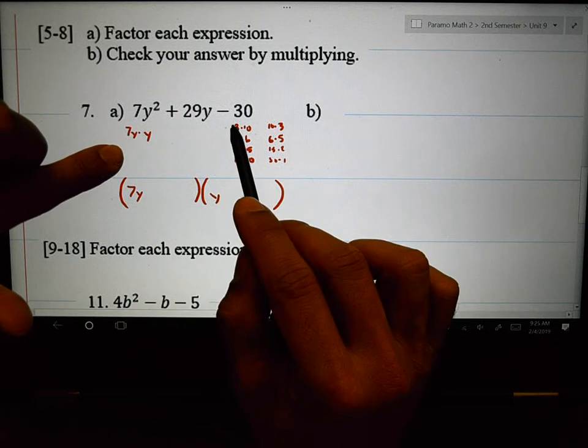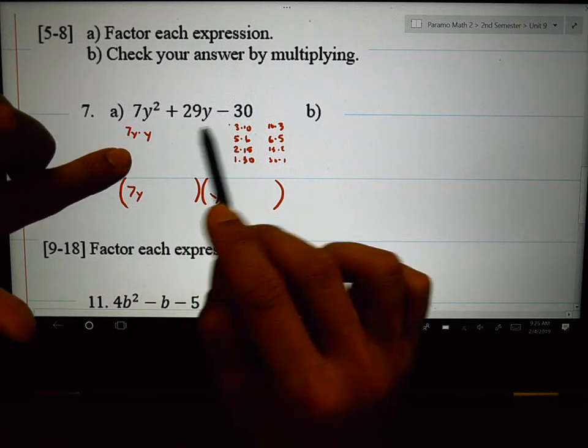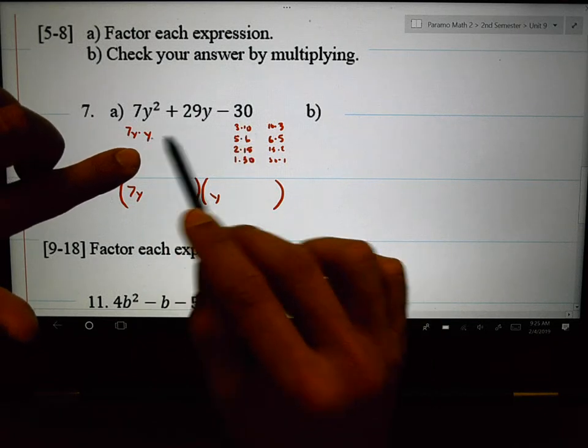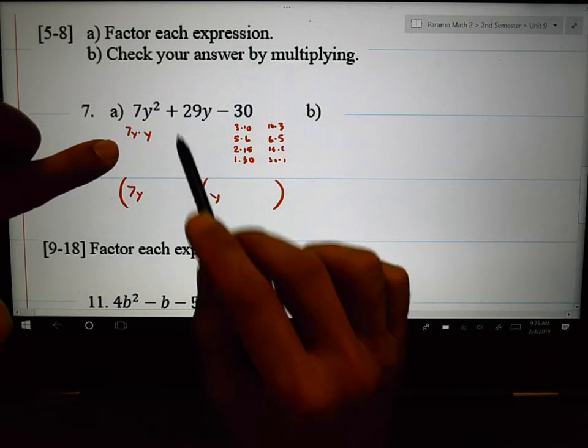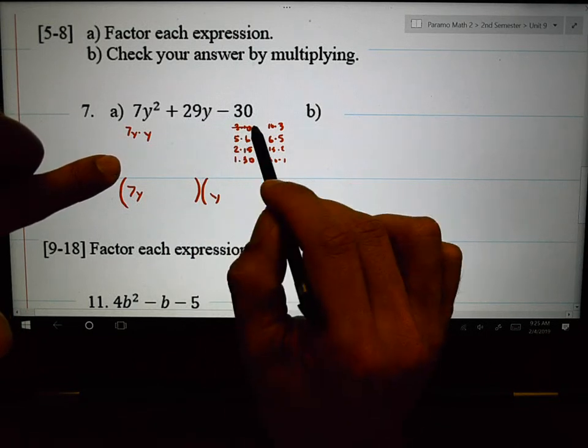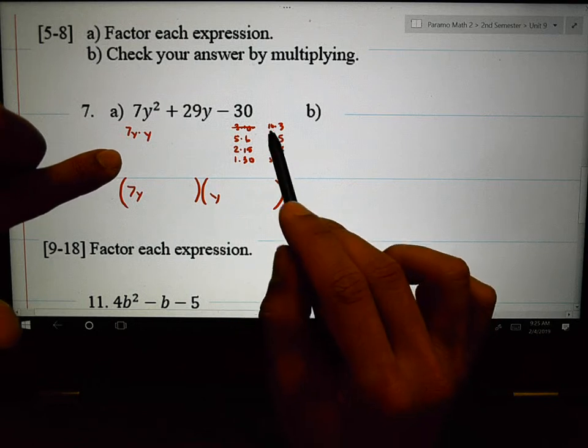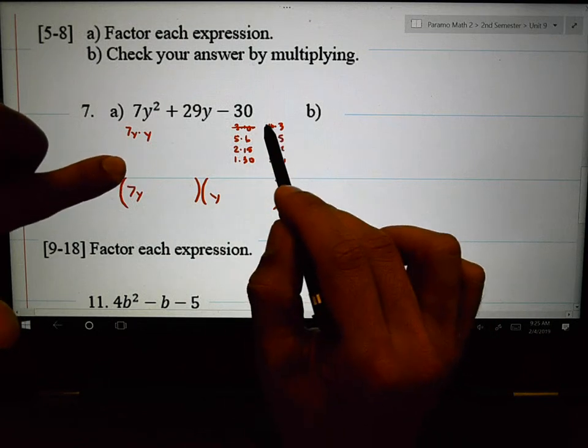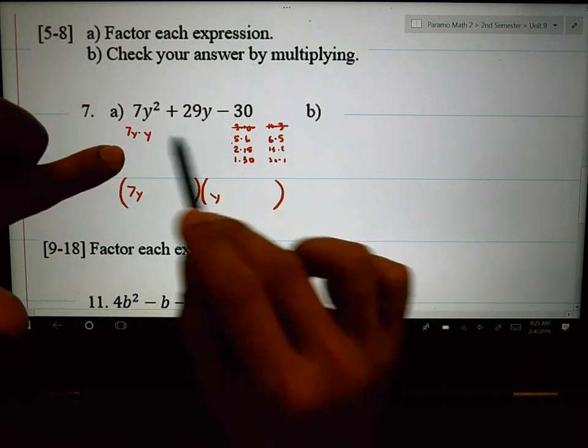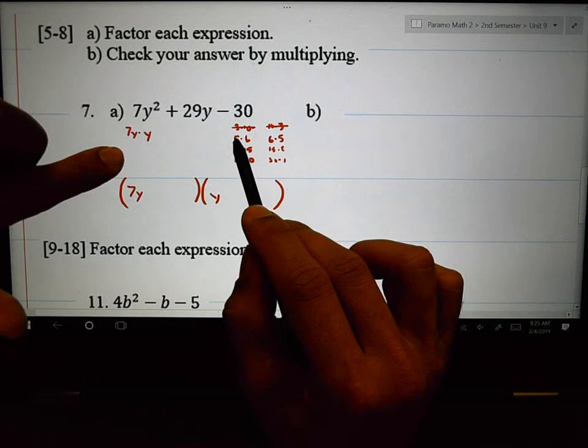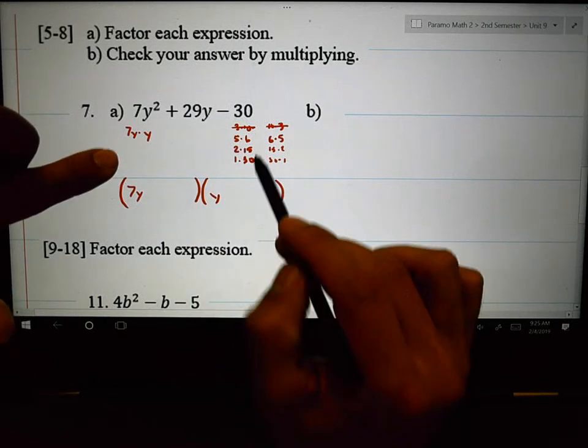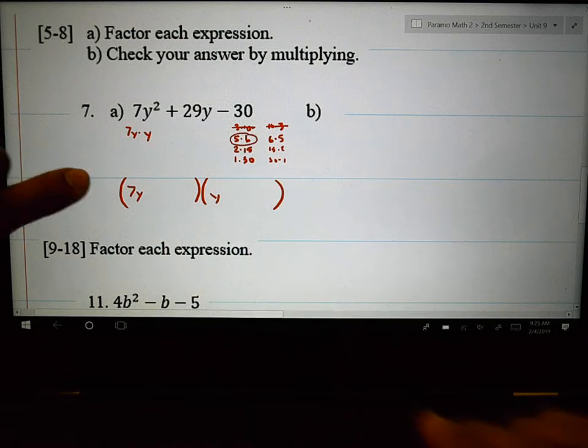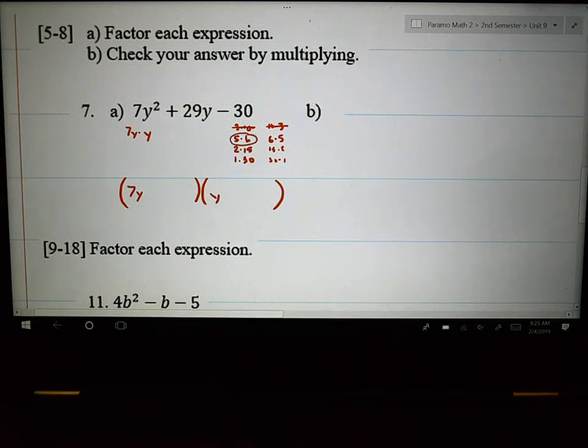7Y times 3 is 21. And 10Y. 21 and 10Y in my head is 31. So close, but it's not what I want. 70 and 3, that's way too high. How about 7 times 5 is 35 and 6. 35 and 6. Is there a way for those to subtract? What's 35 minus 6? Is that 29?